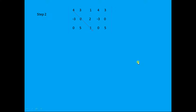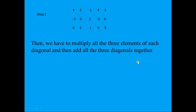Then we take three down diagonals. In this matrix, three elements are left on the left-hand side and three elements are left on the right-hand side. We multiply all three elements of each diagonal, then add all three diagonals together — the elements of each diagonal are multiplied and then added with one another.